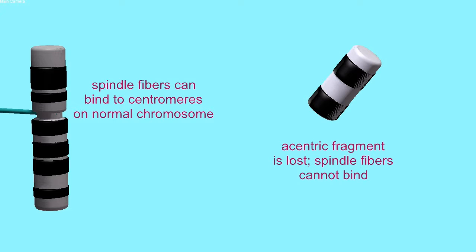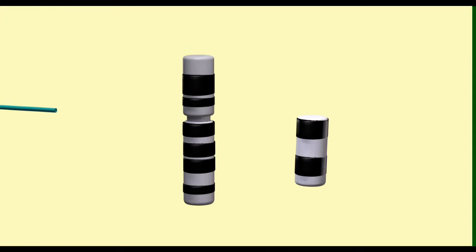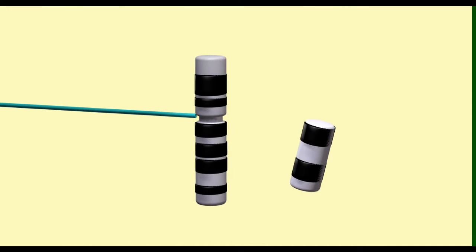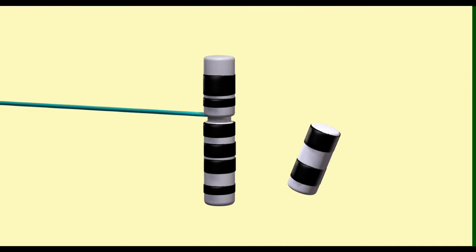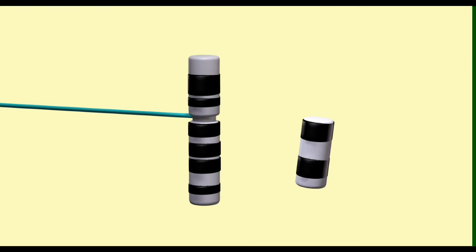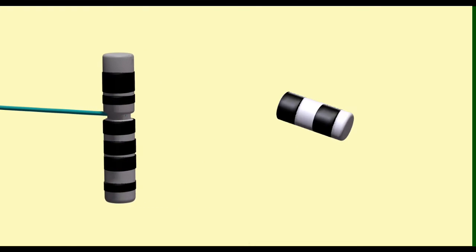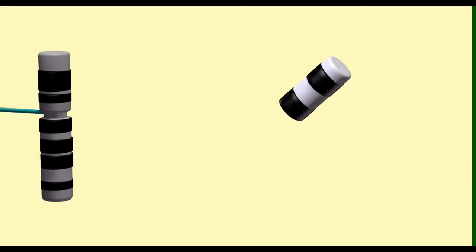During cell division, the centric fragment can move into daughter cells through the use of the microtubules of the spindle. The acentric fragment will be lost given that the spindle fibers lack a centromere where they can bind.